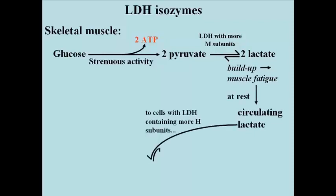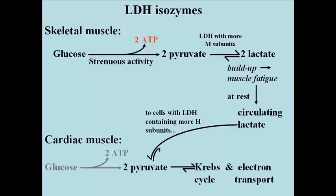When you're finally forced to rest, lactic acid cannot be re-oxidized to pyruvate because the M4 or M-rich LDH isozymes do not readily reverse the reaction. So the lactate is released into the circulation to be picked up by cells with more H-rich LDH isozymes. These cells oxidize the lactate and then the pyruvate for their own use. Heart muscle contains mostly H-based LDH isozymes, which makes sense since cardiac muscle relies exclusively on respiration for its ATP needs for contraction.